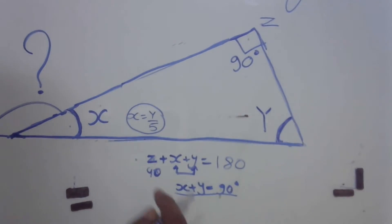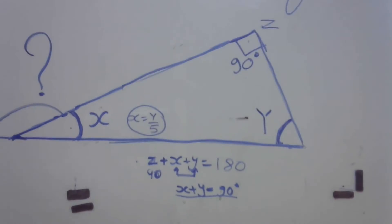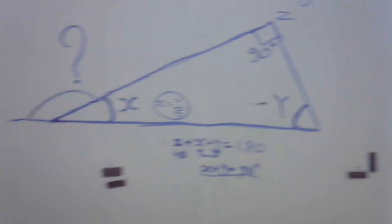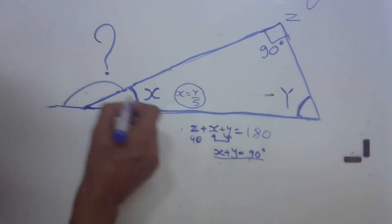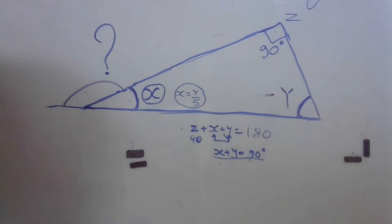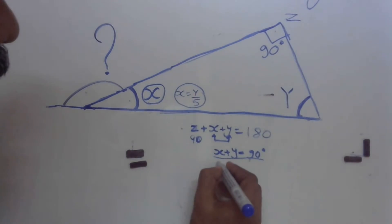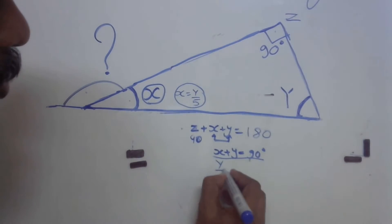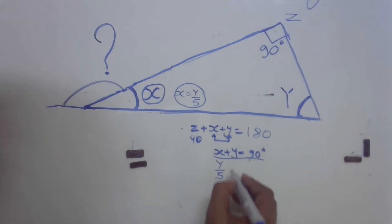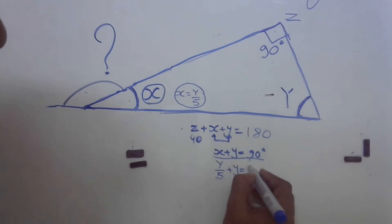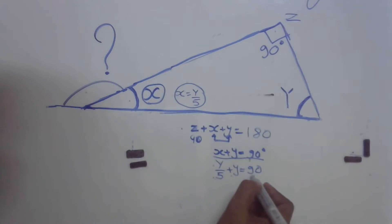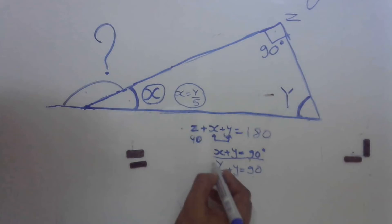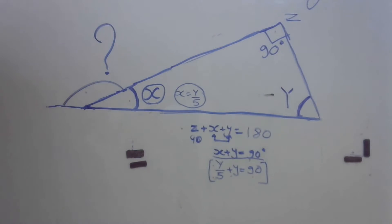Now, x plus y is 90 degrees. In order to solve this, we need to find x. We know x is one-fifth of y. So substituting: one-fifth of y plus y equals 90 degrees. We need to find the value of y.